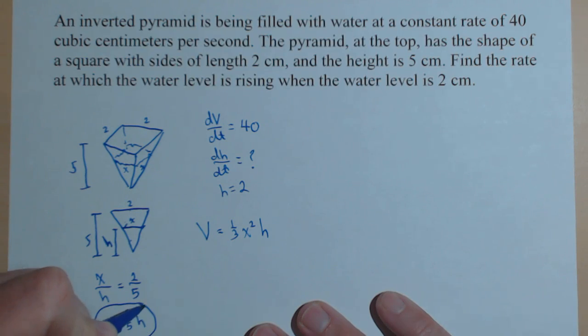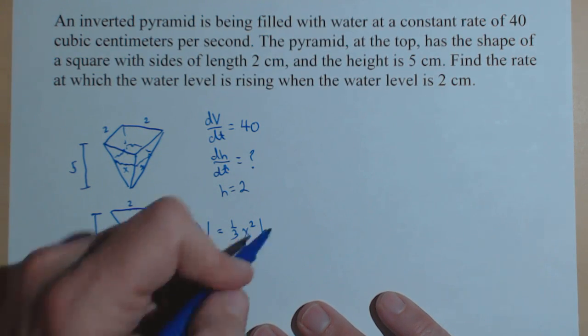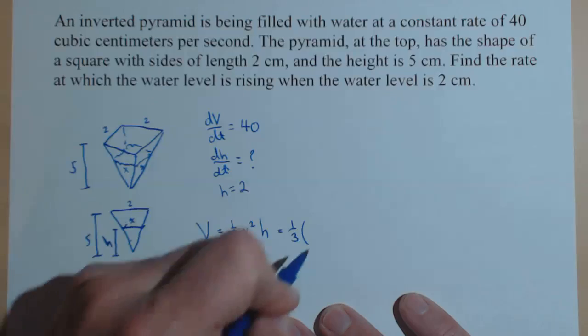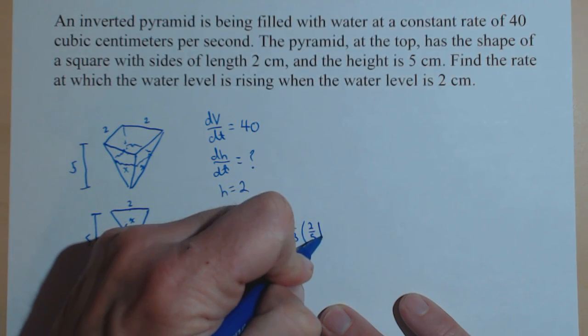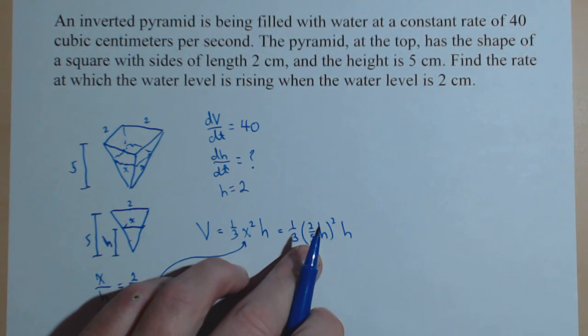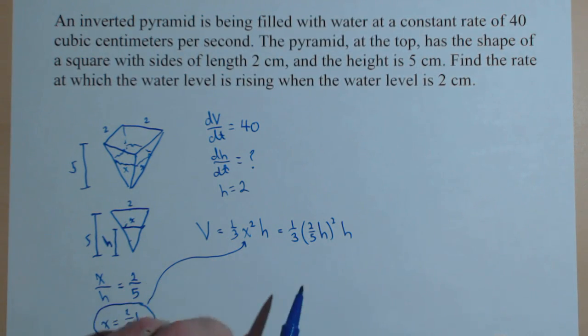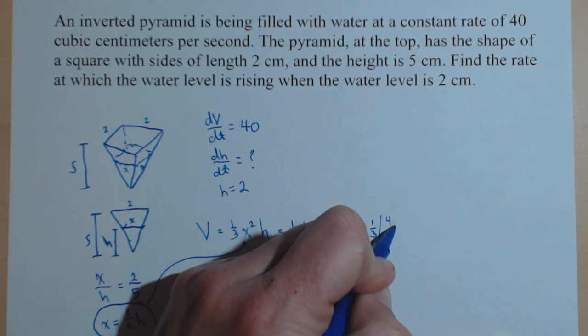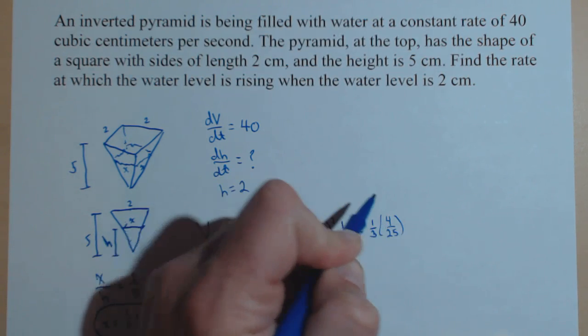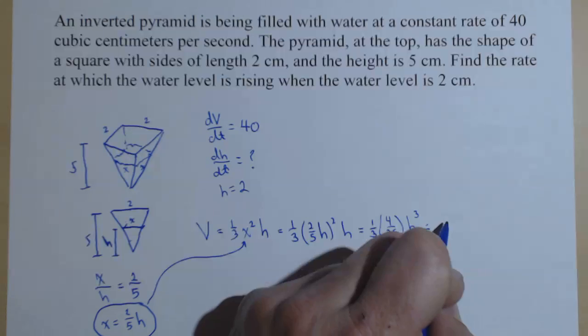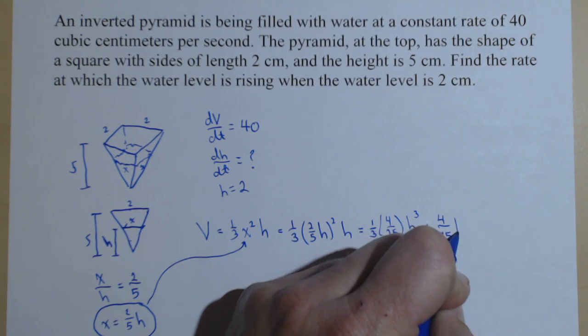Right there I've got my substitution to get x out of this formula and get it all in terms of h. One of the things I see happen a lot, when you sub this in, the 2 fifths h all has to be squared. That gets missed. Sometimes people forget to square this factor out front. So don't forget that part. We have 1 third times 4 twenty-fifths h cubed, or 4 over 75 h cubed.